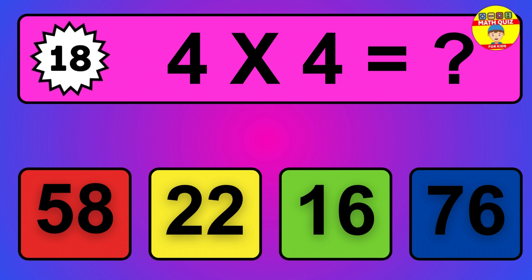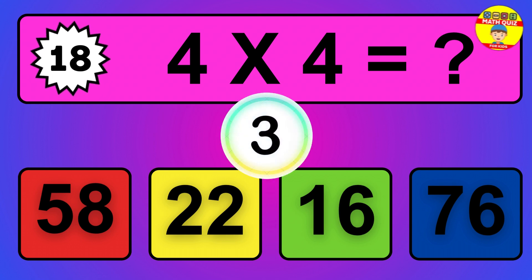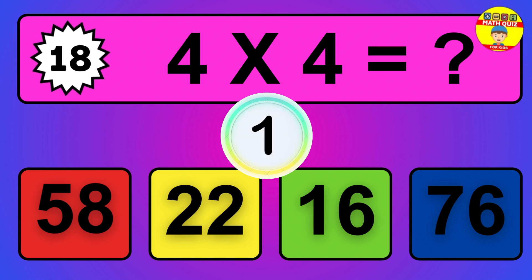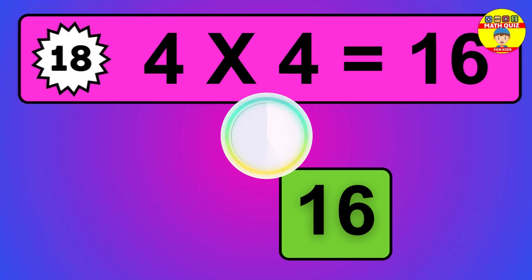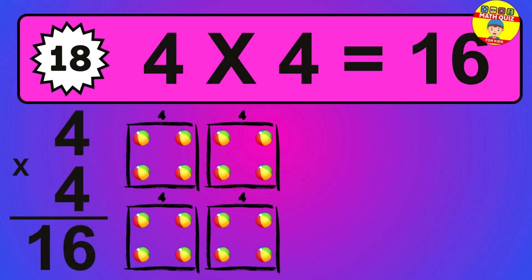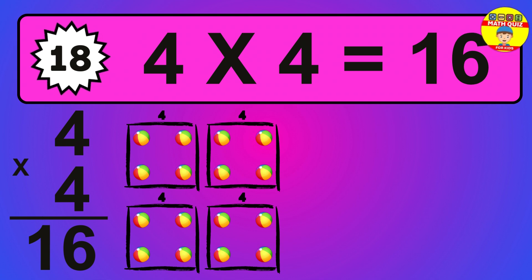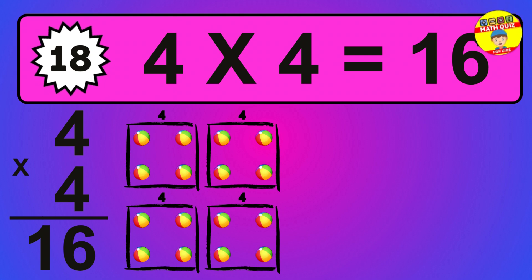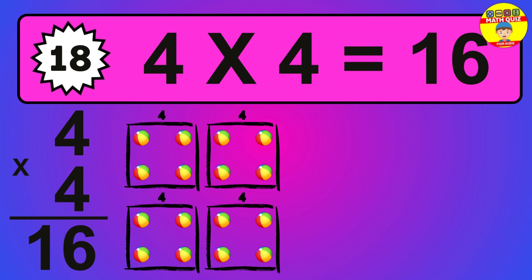Question 18. 4 times 4 equals what? So the answer is 4 times 4 is 16. To calculate, we have 4 groups with 4 balls each one. So how many balls do we have? 16 balls.